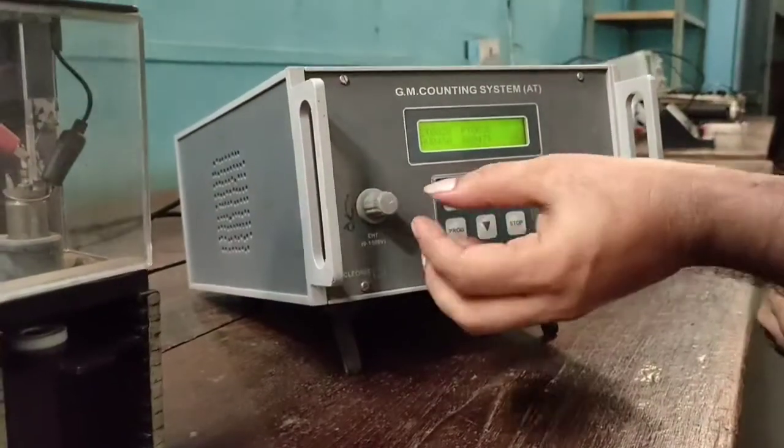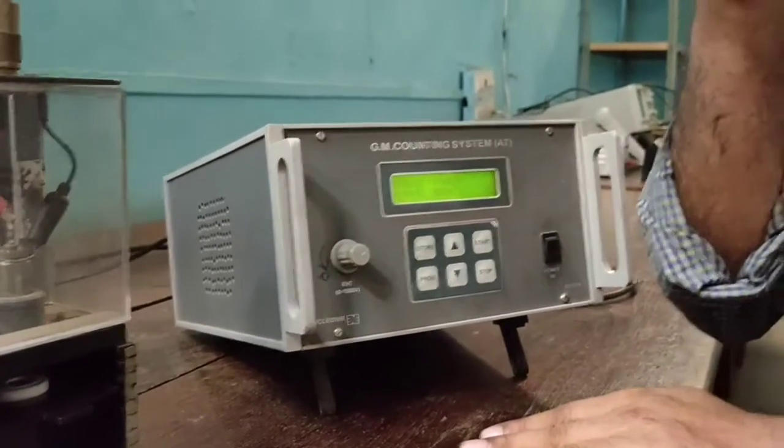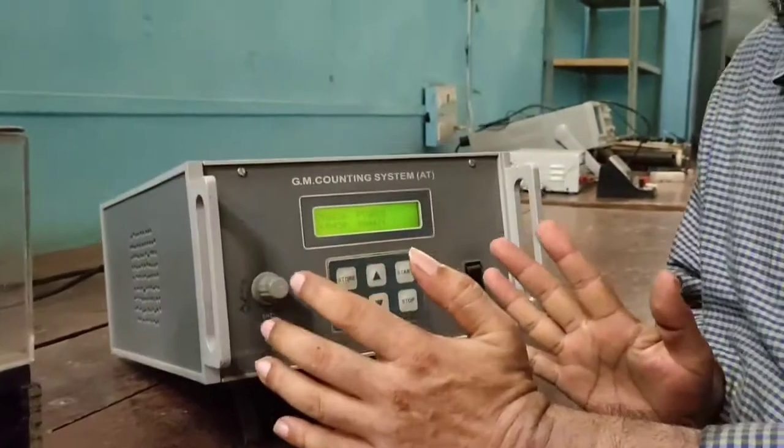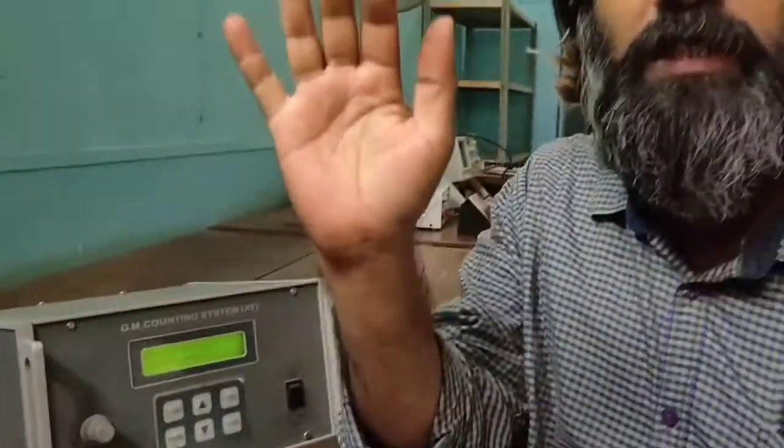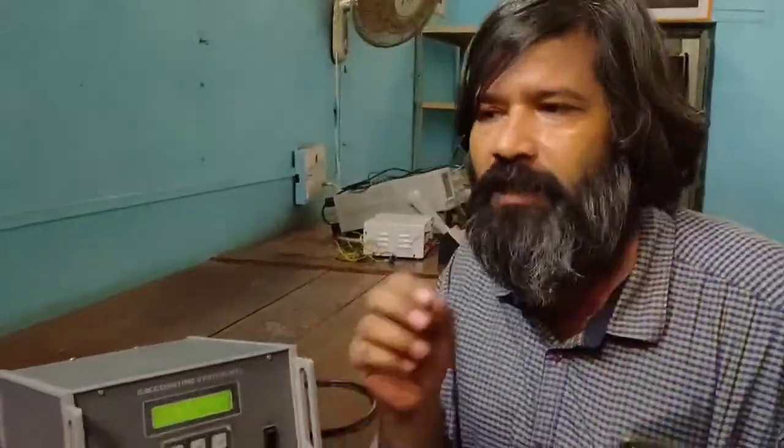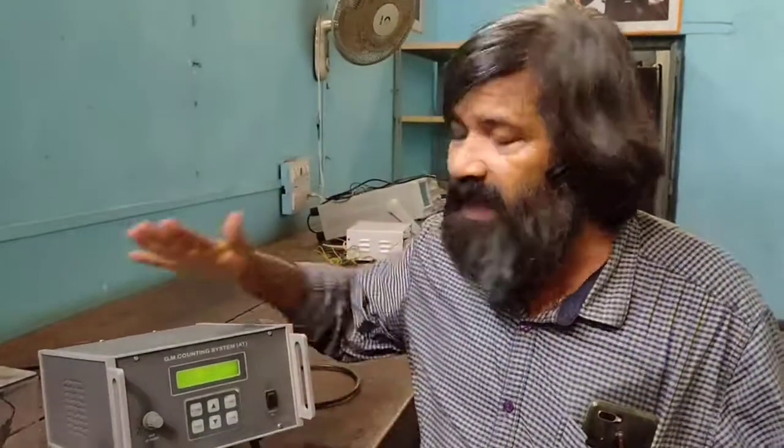Now in this way, if you go on increasing the voltage, count also changes. Then up to certain range of voltage count will remain constant. With further increase in voltage, count rate increases also. Finally, if you plot the graph of count rate versus applied voltage, a graph like this: increasing count, plateau region, once again increasing. So find out the plateau region, find out its middle point, that will be the exact working voltage of this GM counter.